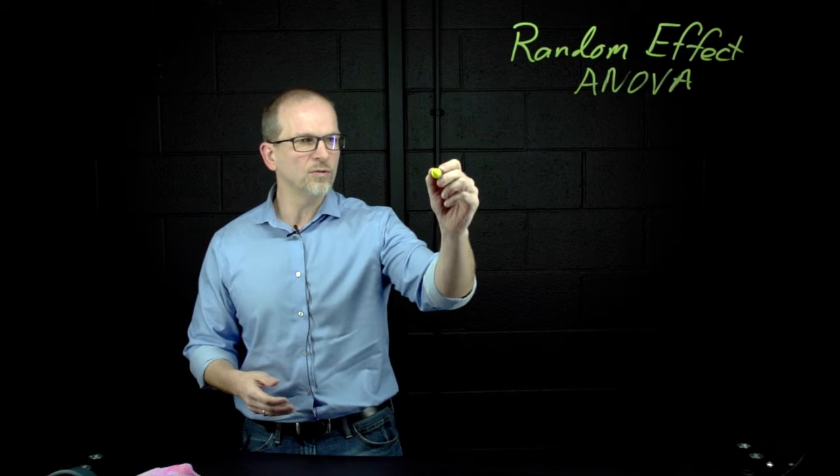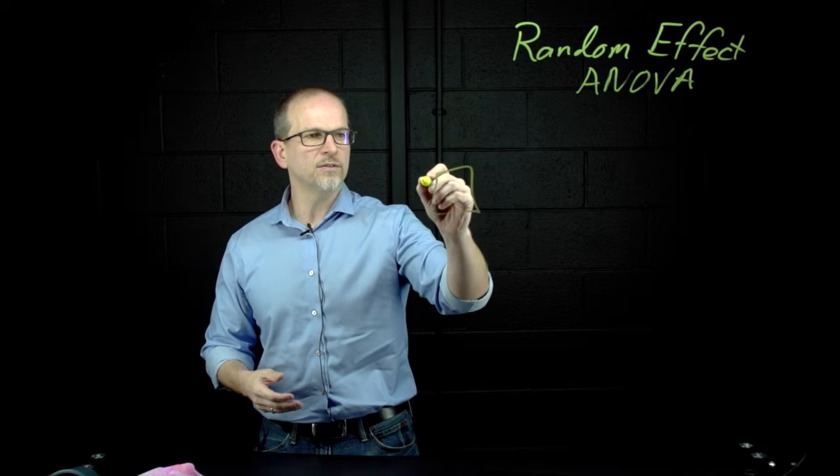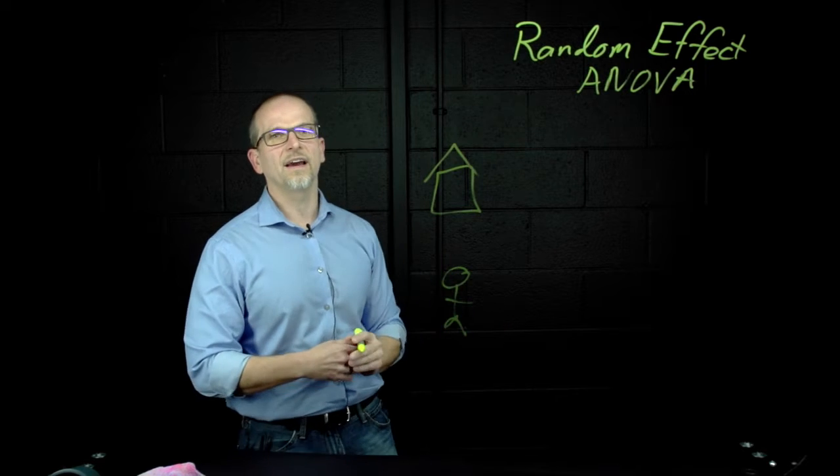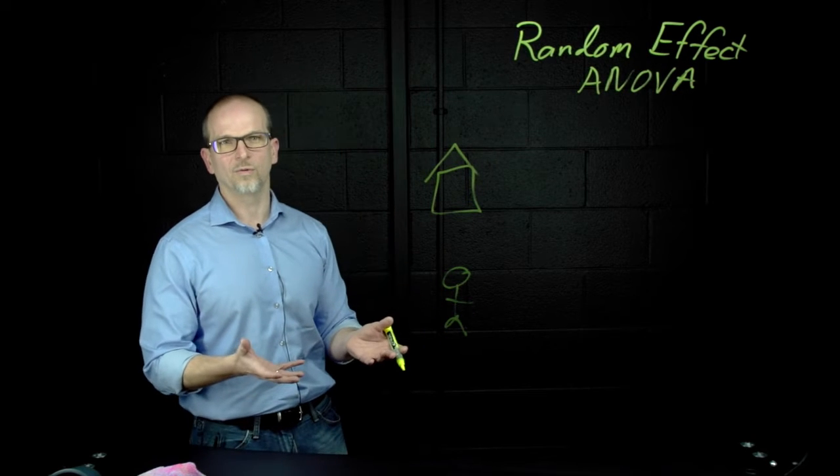Now for this example, I'll use schools as being my level two variable, and students. So what I'm saying is that I now have students that are nested within school.